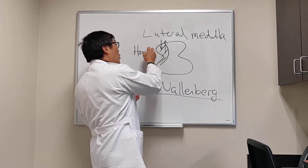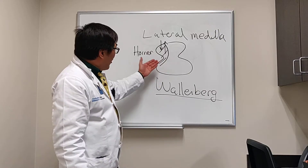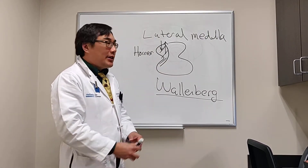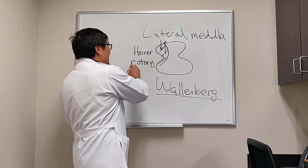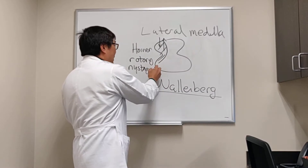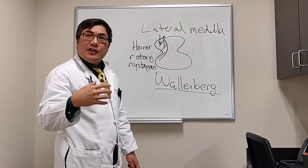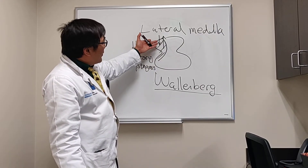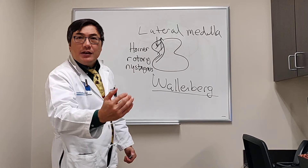When we have a Horner syndrome, we'd like to know if there are other features that might suggest this is the Wallenberg. The other eye features include rotary nystagmus, and that nystagmus might be associated with symptoms of oscillopsia — the subjective motion in the environment — as well as nausea and vertigo. This can result from involvement of the inferior cerebellar peduncle.